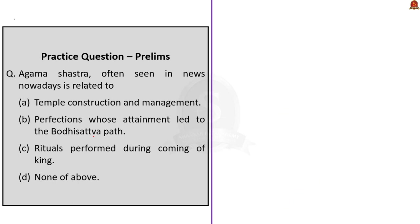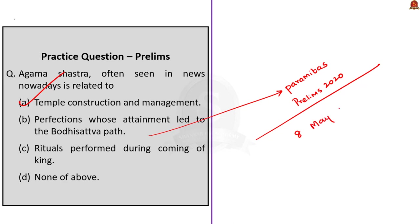The next question asks: Agama Shastra, often seen in news nowadays, is related to — option A: temple construction and management; option B: perfections whose attainment led to the Bodhisattva path; option C: rituals performed during the coming of a king; option D: none of the above. The correct answer is option A — temple construction and management. Option B is talking about paramitas, which was a question in prelims 2020 and was discussed in a previous session on 8th May 2021.